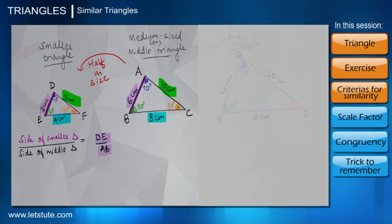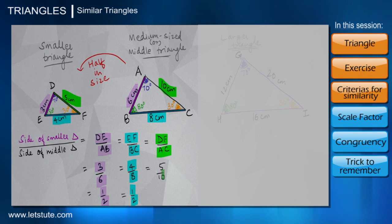If you take the ratio of the sides—that is, the ratio of side DE of the smaller triangle to its corresponding side AB in the medium triangle—we will get 3 upon 6, which is nothing but 1 upon 2. BC of the medium triangle corresponds to EF of the smaller triangle, so if we take the ratio 4 is to 8, again we will get 1 upon 2.